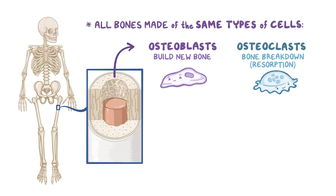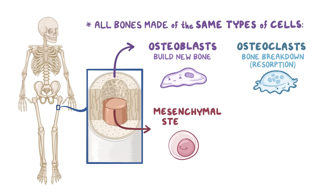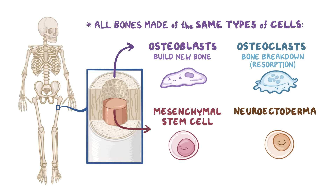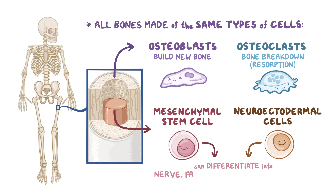In addition to these, there are some more primitive cells in the bone marrow called human mesenchymal stem cells and neuroectodermal cells, which have the ability to differentiate into many cell types, including nerve, fat, bone, and cartilage cells.